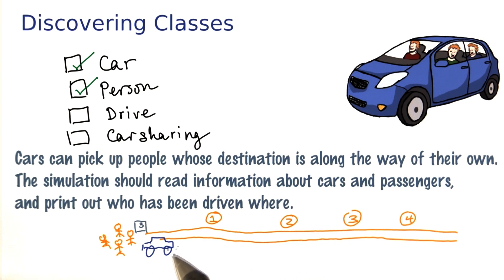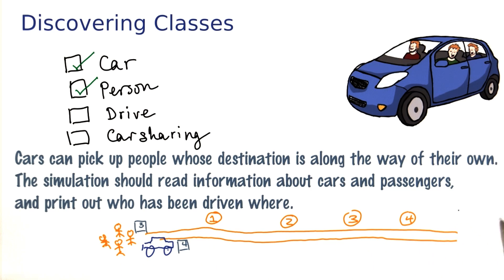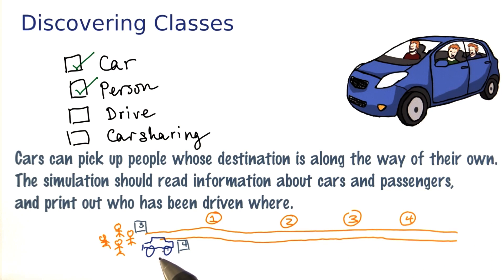We'll have cars that also have destinations. Let's say this car wants to go to destination four. Then of course this car can pick up whatever passengers want to go to destination one, two, three, or four, but not one that wants to go further. And of course the car can only load as many passengers as it has seats — make that one less because the driver also needs a seat.